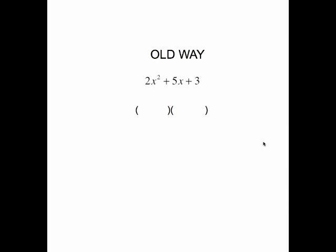Before we do the tic-tac-toe method, let's look at the old way that you probably learned before. This trinomial came from multiplying two binomials together, so the whole idea of factoring is to find those two binomials. The 2x squared had to be found by multiplying two variables together. The only way to get that 2x squared is to multiply a 2x times an x.